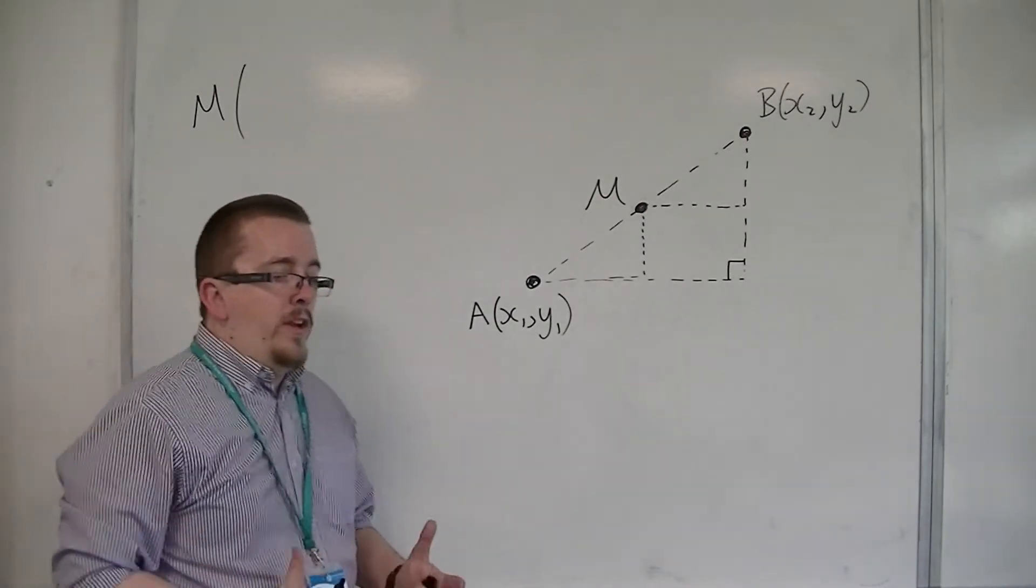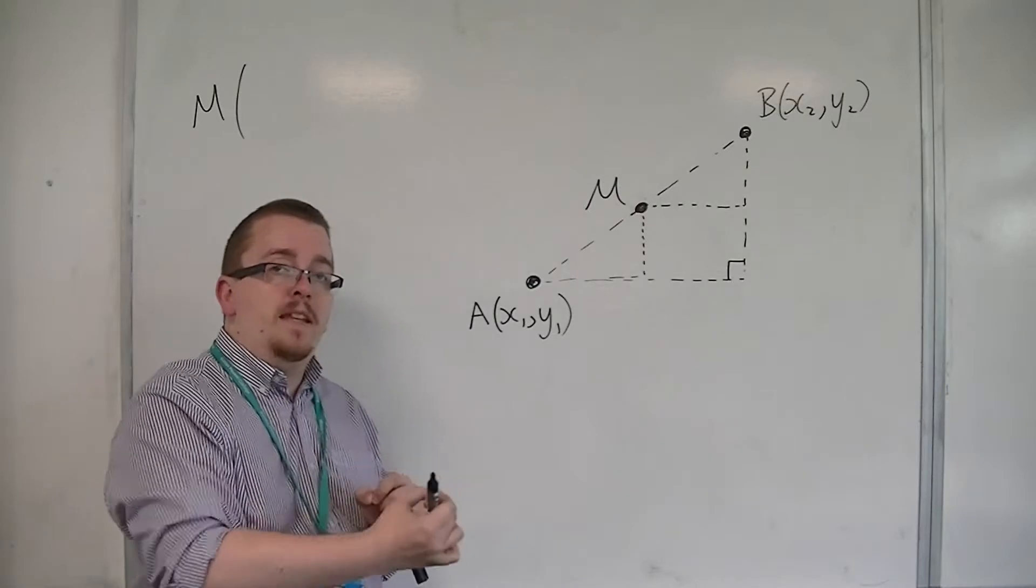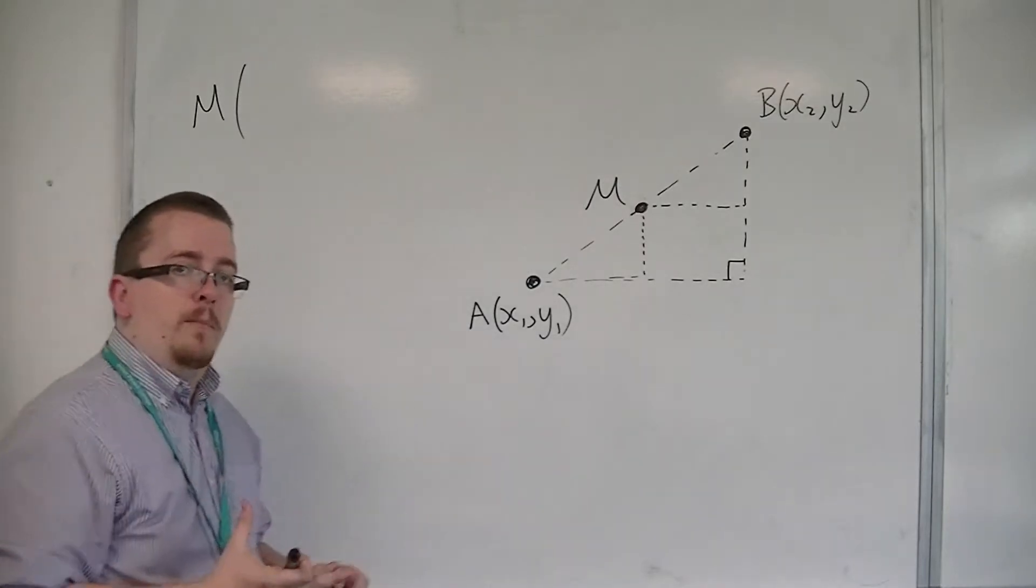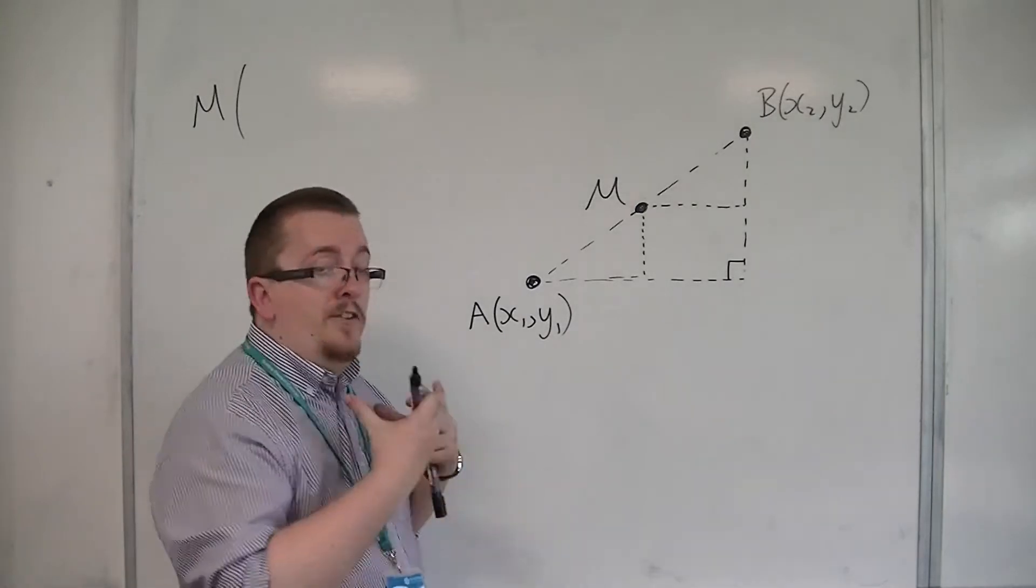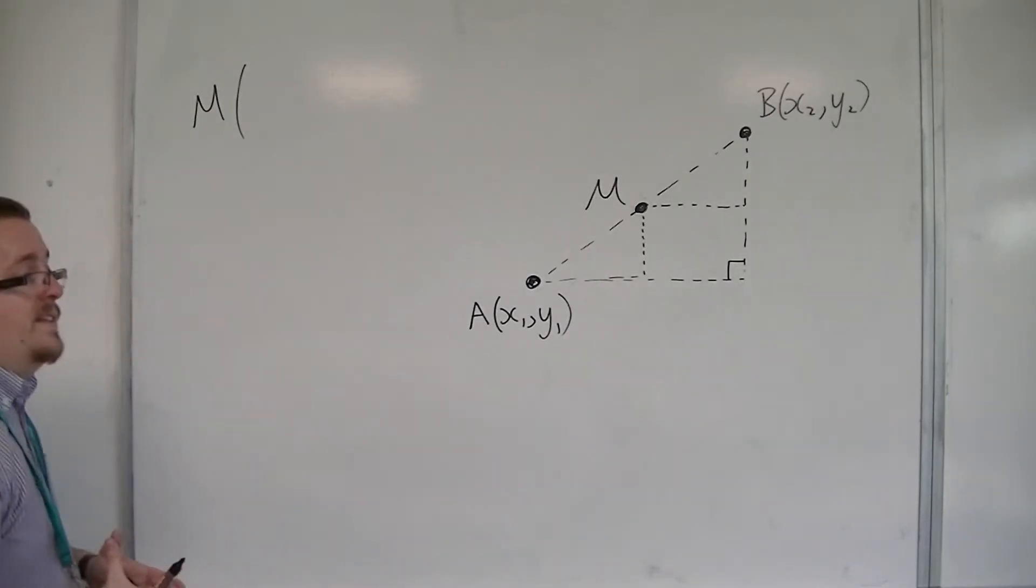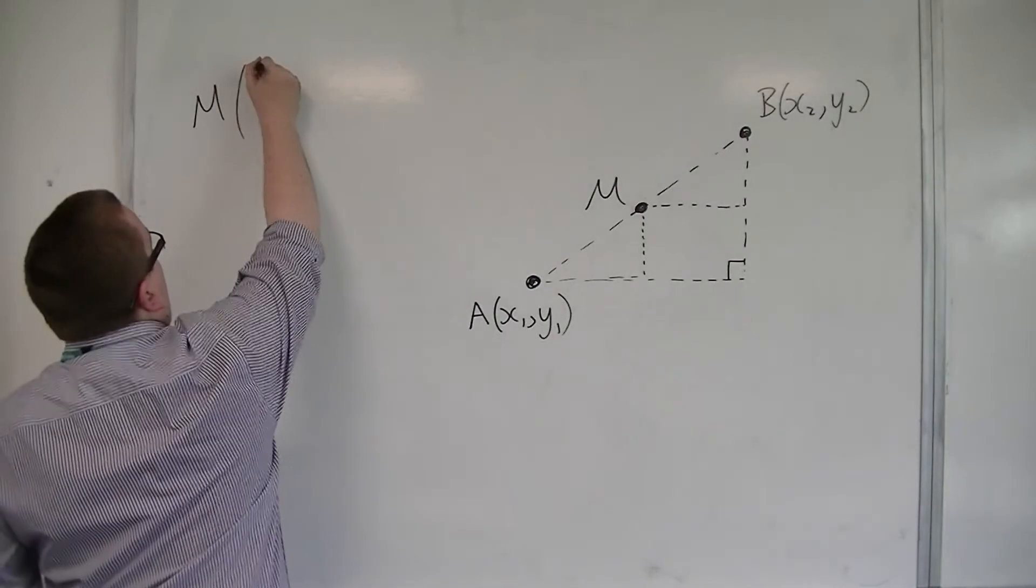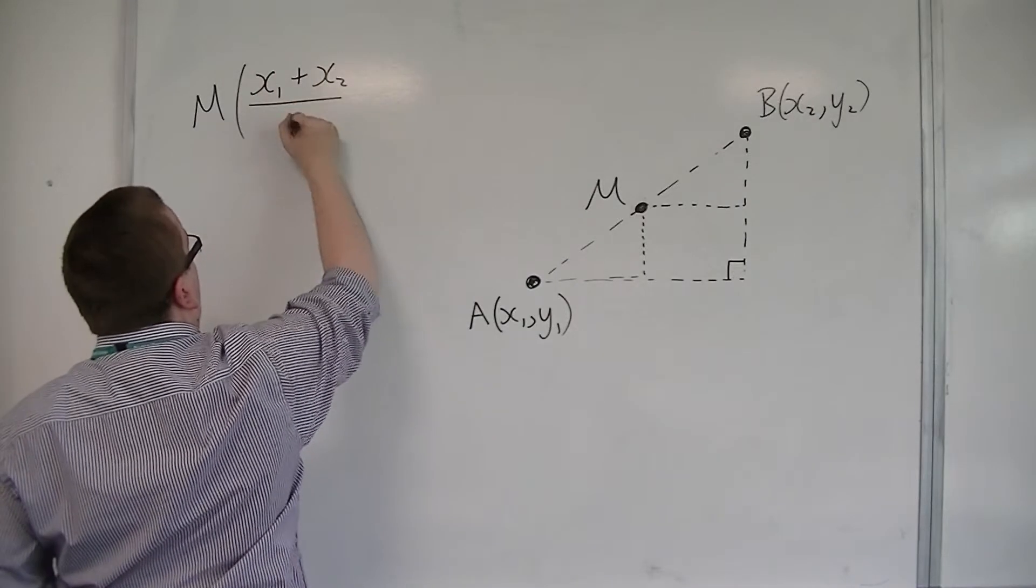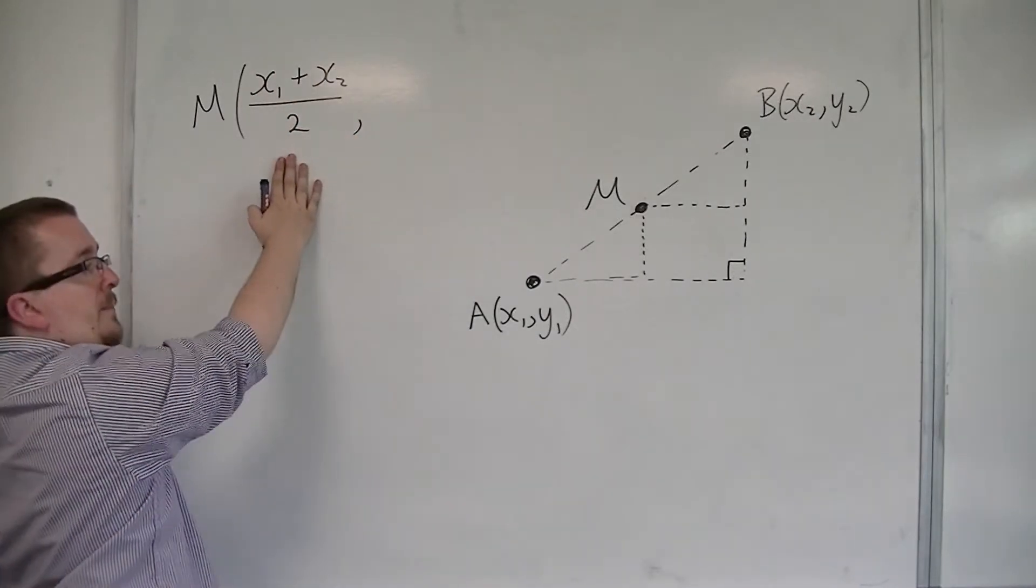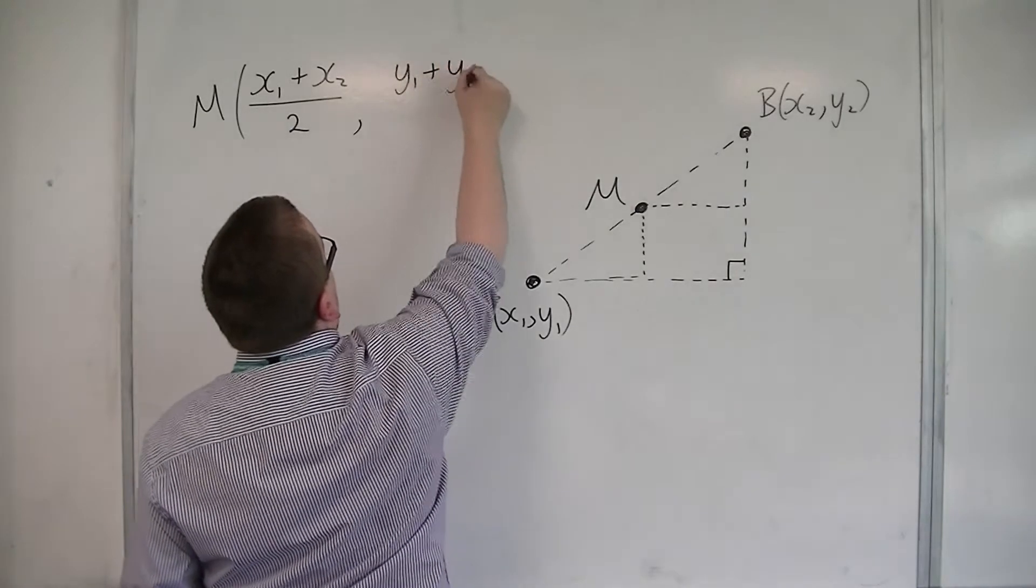So the quick way of finding out which number is precisely in the middle of two other numbers is to average them out, add them together and divide by 2. It's effectively finding the mean of two numbers. So M has the coordinates of x1 plus x2 over 2. That will be its x-coordinate, and its y-coordinate will be y1 plus y2 over 2.